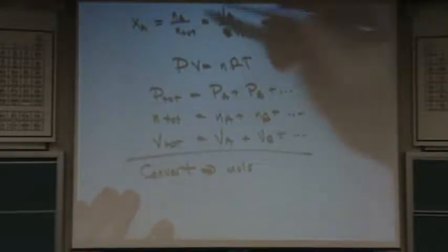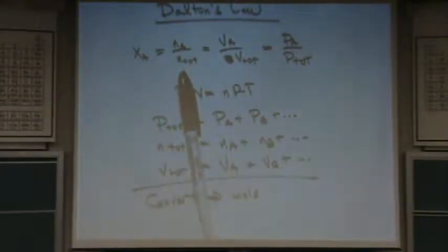And then, if you convert to moles first, you'll have this part of the equation right there. NA over N total, the moles of A over the total moles. And then,